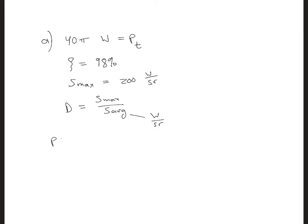So first, the total power radiated is the efficiency times the total power supplied to the antenna. So that is 0.98 times the 40 pi, and that's in units of watts. So now we can find S average is P radiated over the area of a sphere.